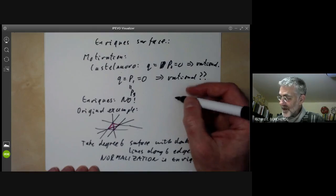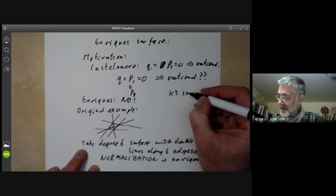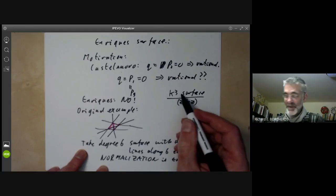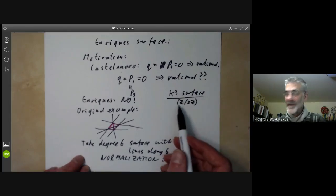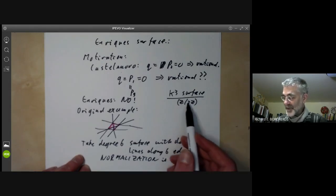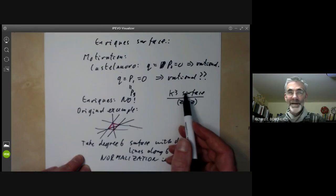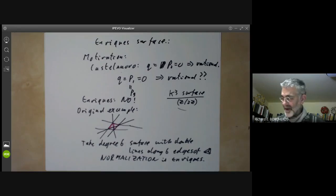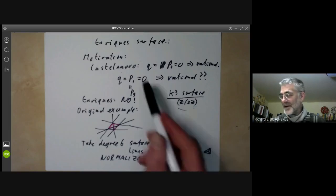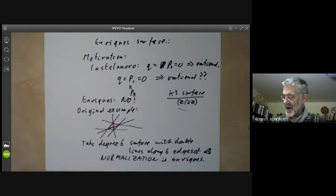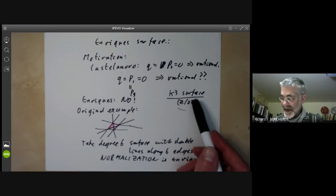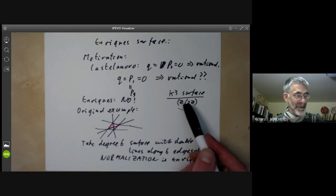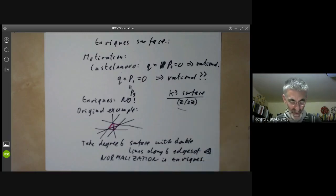There's another way of forming Enriques surfaces, which is you take a K3 surface and quotient it out by a group of order two acting fixed point freely. So Enriques surfaces have the same relation to K3 surfaces that hyperelliptic surfaces have to abelian varieties. The theory of Enriques surfaces turns out to be very similar to the theory of K3 surfaces. Their classification is reasonably well understood. There's a 10 dimensional irreducible family of Enriques surfaces.